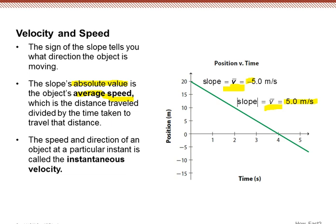The speed and direction of an object at a particular instant, so these two are talking about average, and if we want to look at the velocity at a particular instant, that is the instantaneous velocity. Think of, take a snapshot, what is the speed on the speedometer and what is the direction at that moment. That is the instantaneous velocity.